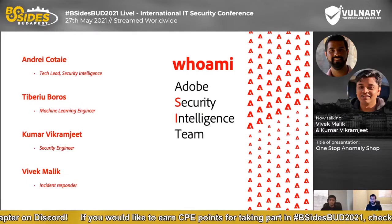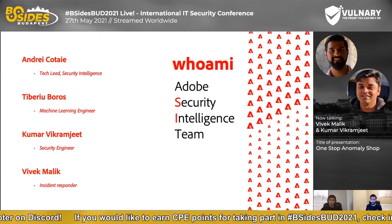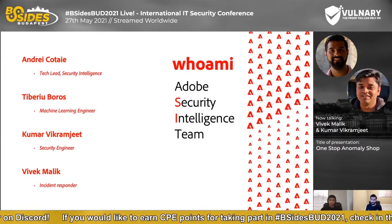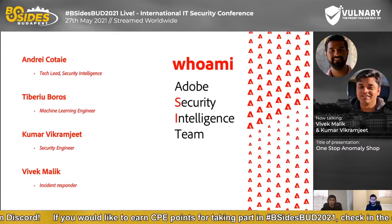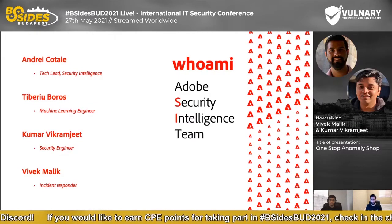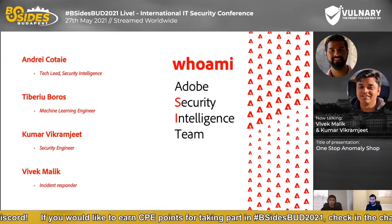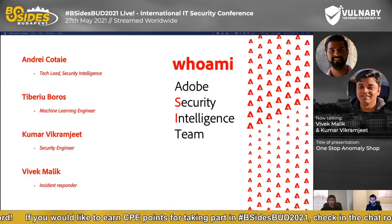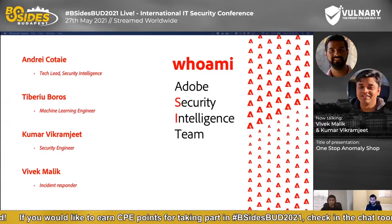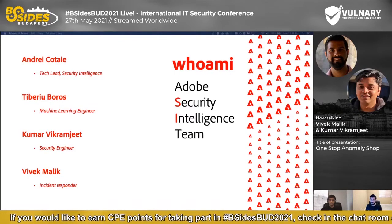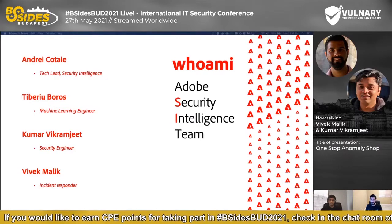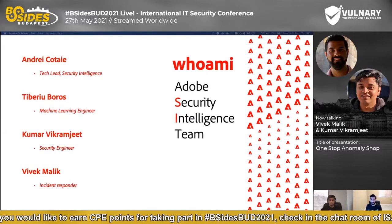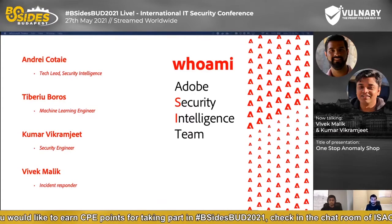Who are we? A couple of words about us. We are Adobe's Security Intelligence Team, which is part of Adobe's Security Coordination Center. The purpose of the team is to do data science research in the security field. We mostly focus on reactive security — that is, identifying threats that cannot be detected by conventional ways. In other words, we use the logs and security data collected from Adobe's assets and try to find anomalies and the bad stuff. The members of this team are Andre Kotai, Tiberi Boros, Kumar Vikramjeet, and myself, Vivek Malik.